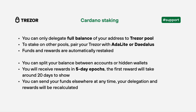You will receive rewards in 5-day epochs; the first reward will take around 20 days to show. You can send your funds elsewhere at any time; by doing this, your staking will be recalculated to reflect your new balance.